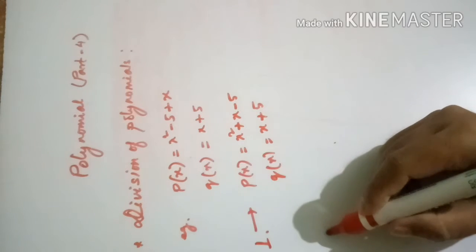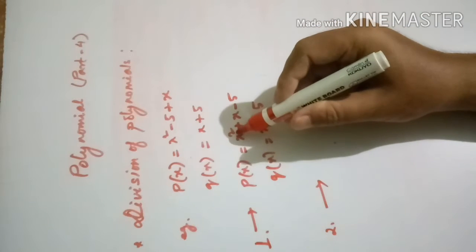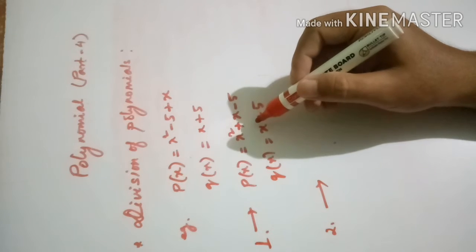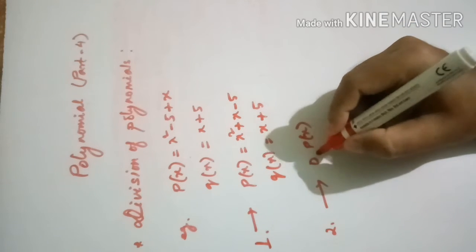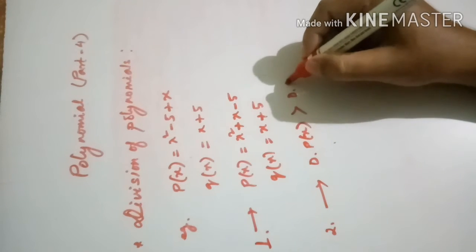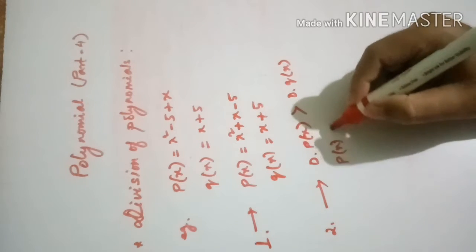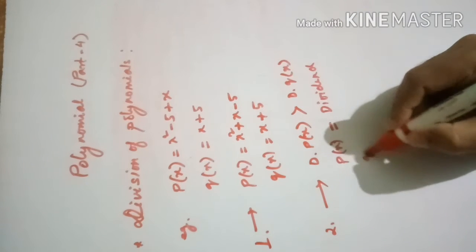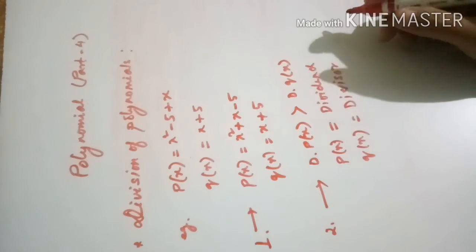The second step is finding the degree. The degree of p(x) is 2, and the degree of q(x) is 1. The degree of p(x) is greater than the degree of q(x), so p(x) will become the dividend and q(x) will become the divisor.